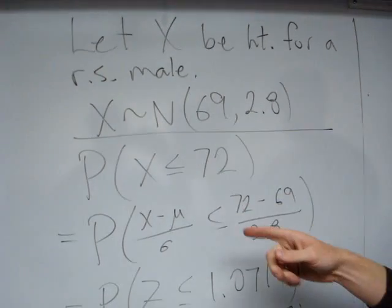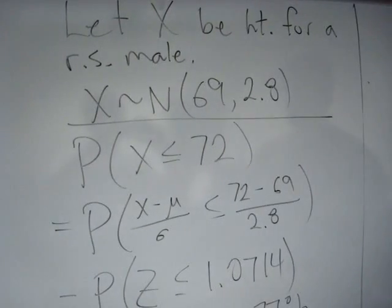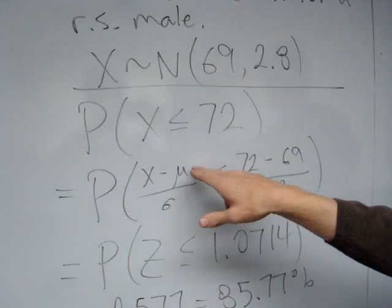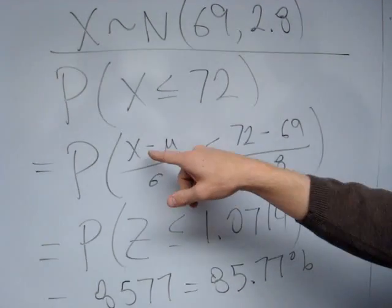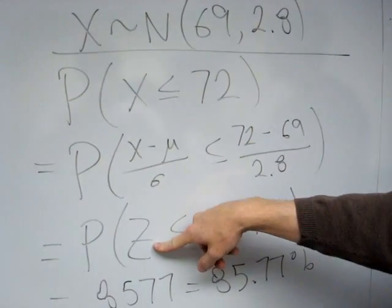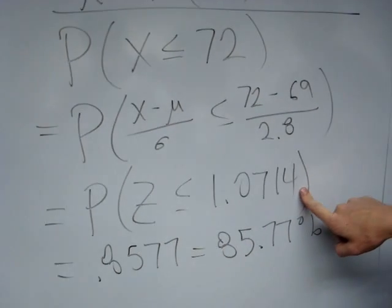So since we know it's normal, we can go ahead and standardize it and then use our Z table in the back of our textbook. So subtract the mean, divide by the standard deviation, and do that to both sides of the inequality. Since X was normal when I standardized it, here I get Z, where Z is a normal 0-1 random variable, and over here I get 1.0714.